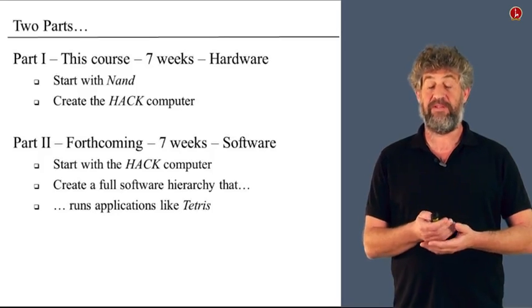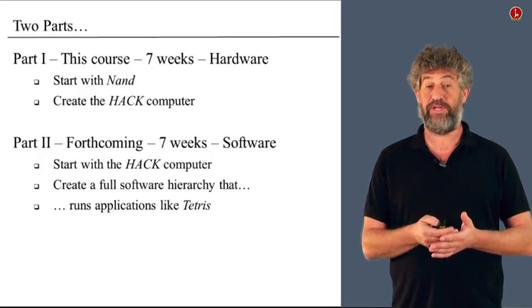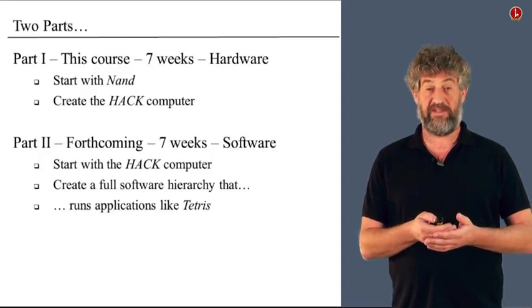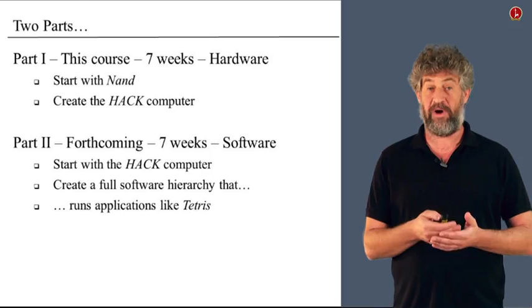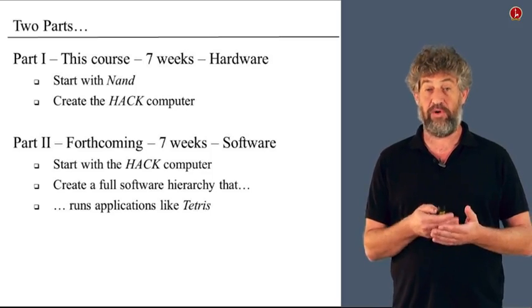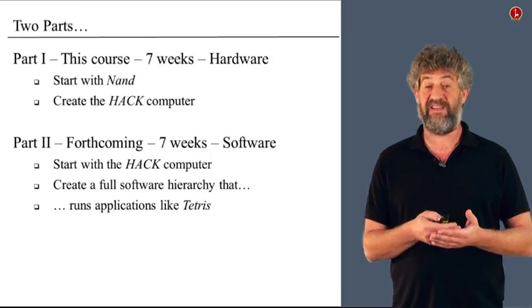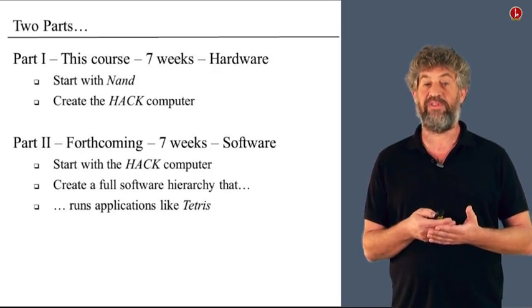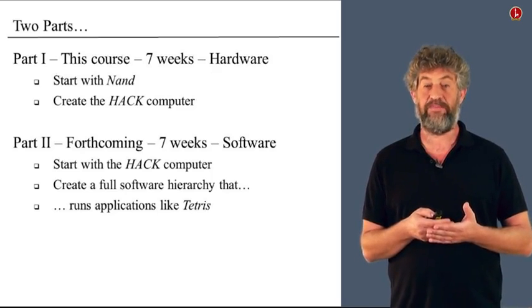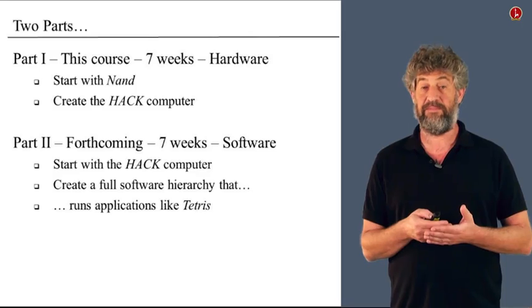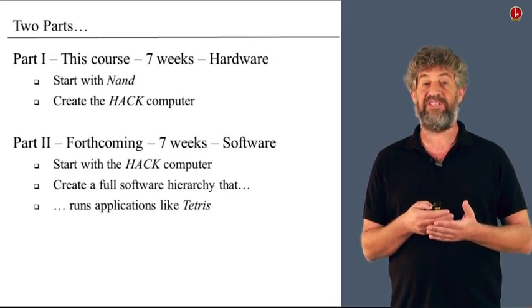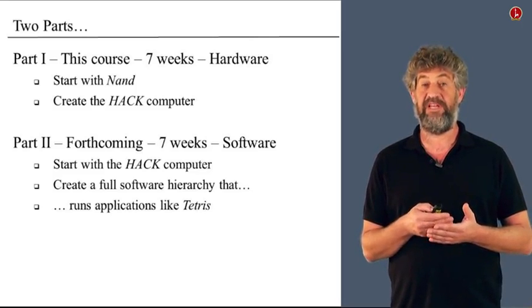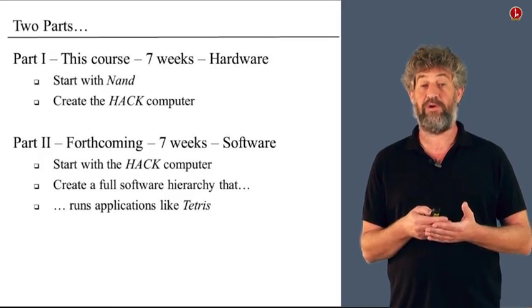All this accomplishment is going to happen in 14 weeks, and in two parts. In the first part of the course, which is what we currently have on Coursera, which is going to last seven weeks, we're going to build the whole hardware platform of a computer. We're going to start with a very simple logic NAND gate, and we're going to create a computer that can run assembly machine programs. And this is what you do in the first part of the course. Seven weeks, seven different steps, each step very simple. And you get a working hardware platform.